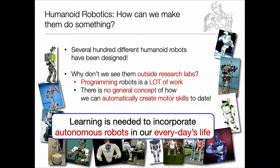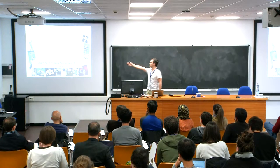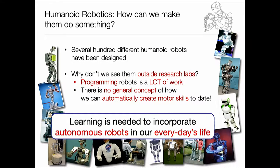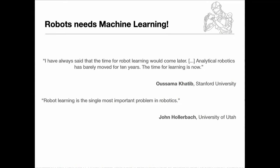When you look at this, despite all these amazing robots, we're actually kind of stuck. So what should we do? I propose — and many others have before me — that learning is the only way to bring autonomous robots out of research labs, away from factory floors, and into everybody's life. And I think by now it has arrived in the classical robotics community. Even Oussama Khatib said to me: 'I've always said the time for robot learning would come later, but analytical robotics has barely moved for 10 years — the time for learning is now.' And John Hollerbach put it: 'robot learning is the single most important problem in robotics.'